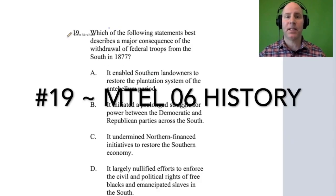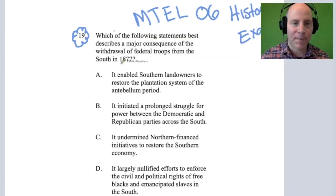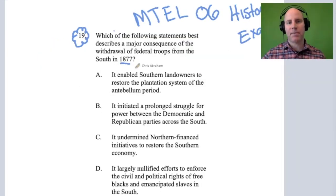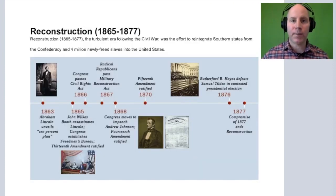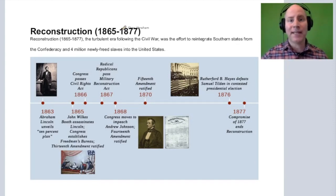Number 19 from the M-106 History Exam: which of the following statements best describes a major consequence of the withdrawal of federal troops from the South in 1877? Remember, that's the end of Reconstruction. We think about Reconstruction and that timeframe immediately after the Civil War, between 1865 and 1877.